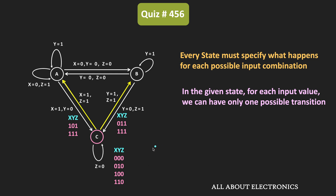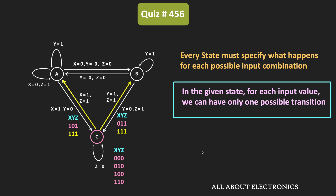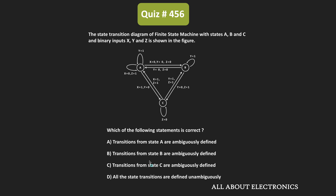Now if you notice, for the input combination 1,1,1 we have two outgoing transitions — both a C to A transition and a C to B transition. But as per the rule, for each input value we can have only one outgoing transition. So we can say that in state C there is ambiguity. That means for the same input, we cannot have more than one outgoing transition. Therefore, for the given state diagram, the transitions from state C are ambiguously defined, and C is the correct answer.